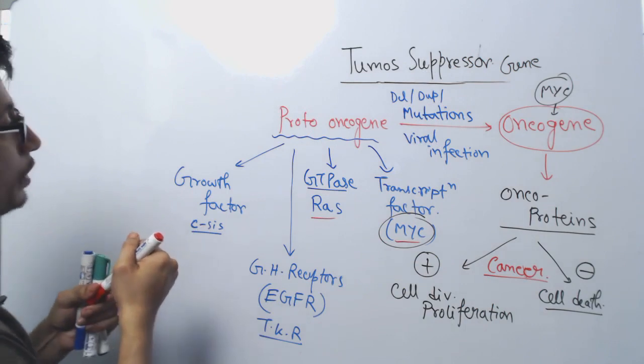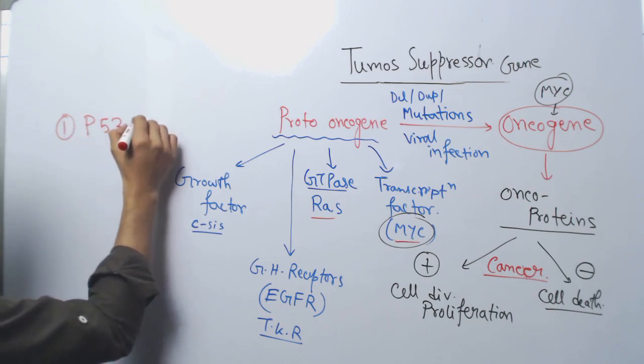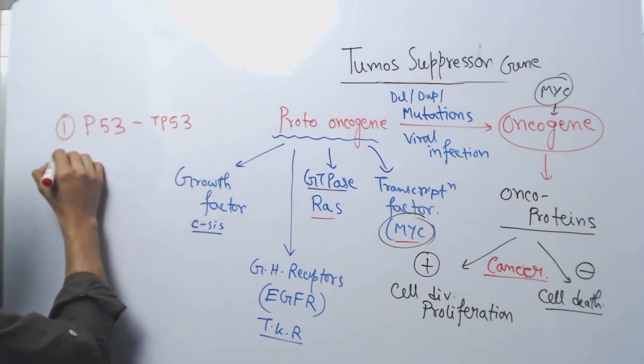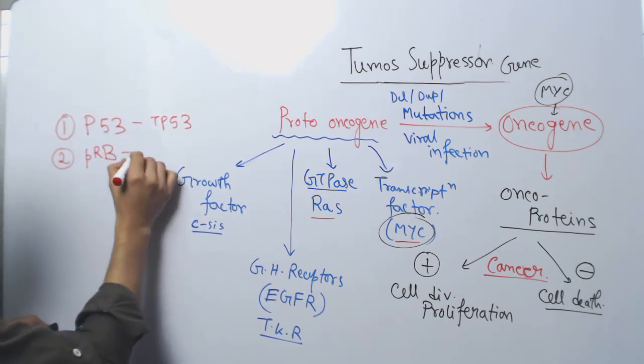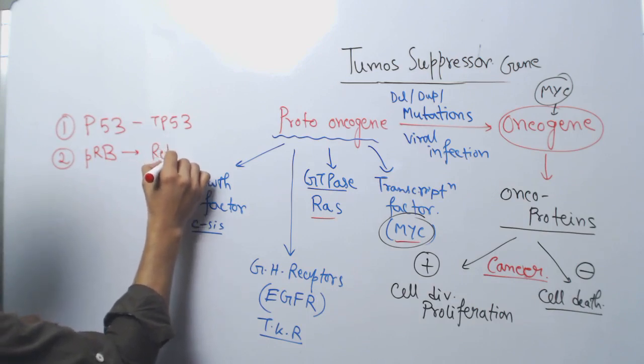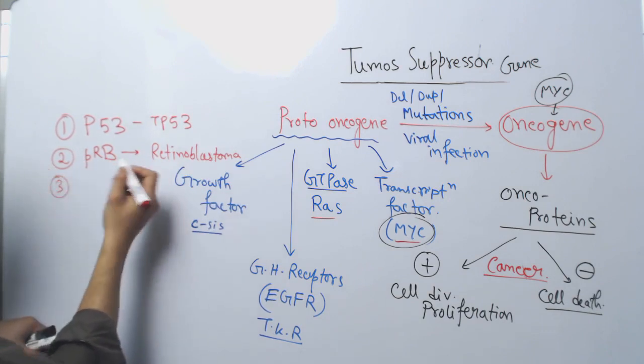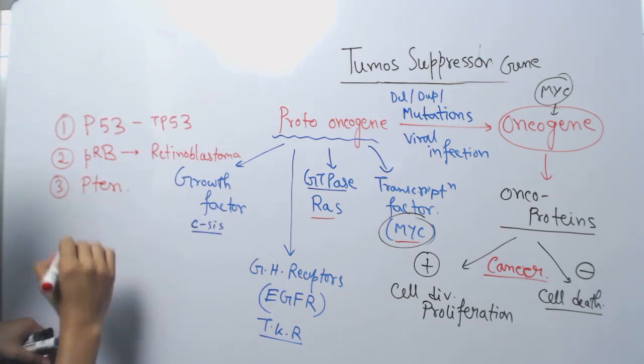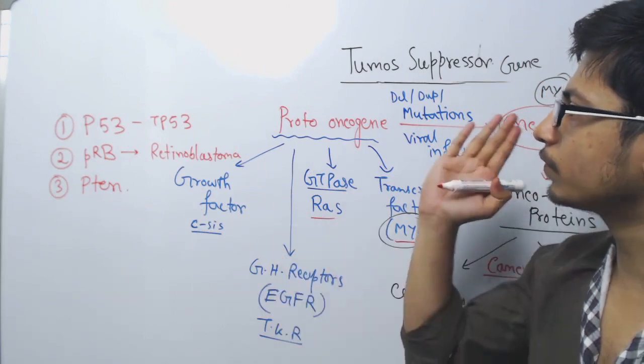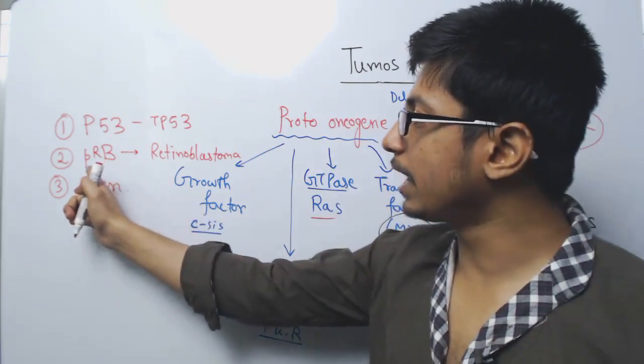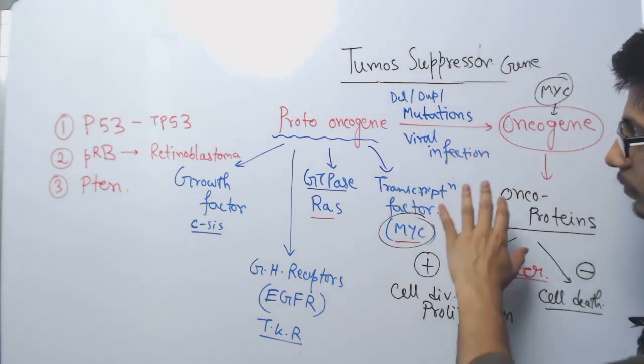Examples of tumor suppressor genes include P53 protein, with gene name TP53, another example is PRB retinoblastoma protein, and P10. These are some major examples. PRB is one of the first tumor suppressor genes identified.